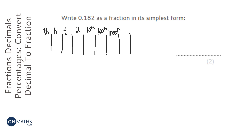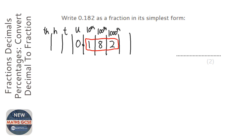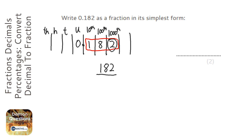So this number is zero units, one-tenth, eight-hundredths, and two-thousandths. Now what you do is you look at where the last number is, which is this two, and you grab all of this number — so that's a hundred and eighty-two. And you put it over the last column, so this two is in the thousandths column, meaning it goes over a thousand.